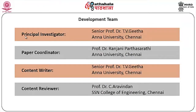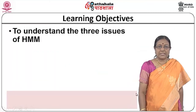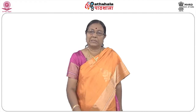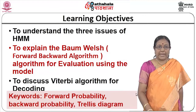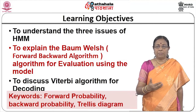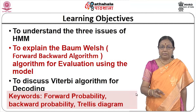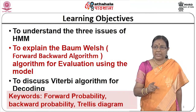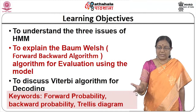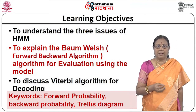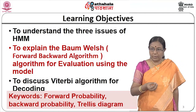Now let us look at the learning objectives associated with this module. The first learning objective is to understand the three issues of HMM modeling. There are three problems associated with HMM. We are going to explain how the Baum-Welch algorithm is used for one of those issues, and look at decoding for which we will discuss the Viterbi algorithm. The third issue will be discussed in the next module. The key words are: forward probability, backward probability, and the trellis diagram.